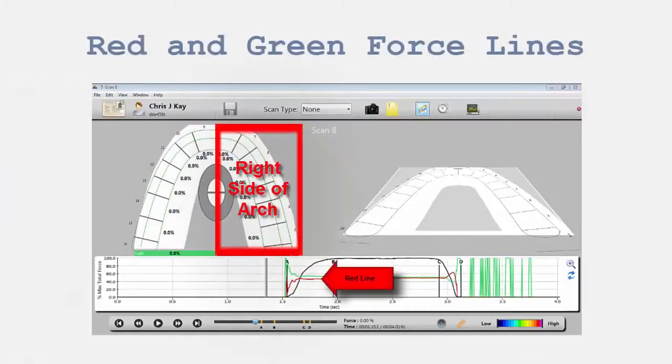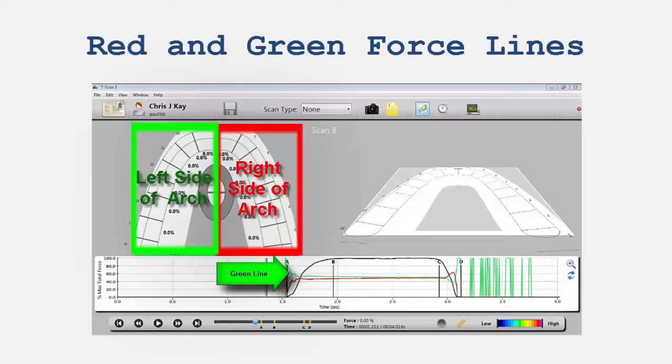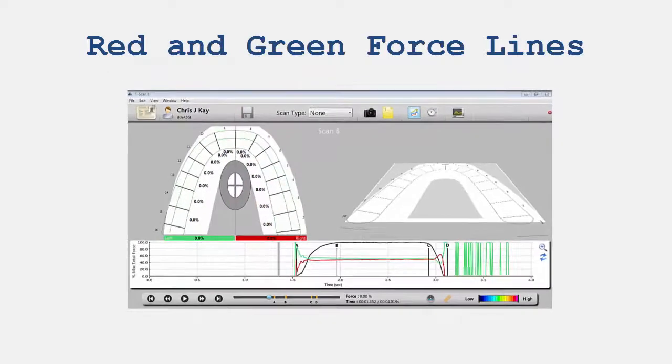Red and Green Force Lines. The red and green lines in the force versus time graph allow the user to compare the forces between the left and right sides of the arch. Observing the red and green lines, the dentist can establish which arch has contacts first and which side is more forceful.